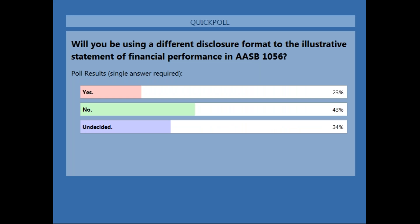About a quarter of the attendees have said that they would be using a different format to the illustrative statements in AASB 1056 itself. 43% say no, they're happy to follow that example. And a third are still deciding which way to go. I think it does show that at least the illustrative examples will be useful in making a decision as to how you will present your statement of financial performance.